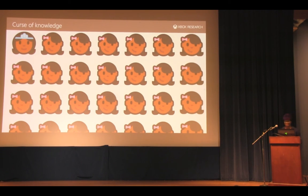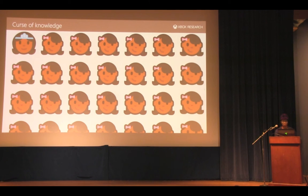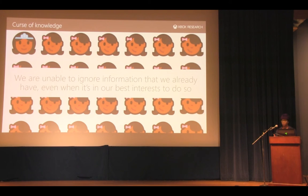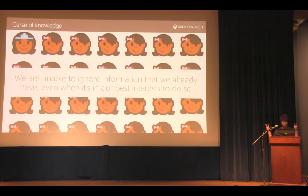In game development, the false consensus bias can make us think that other people play and enjoy games exactly the same ways that we do. The truth is that game developers are not just like everyone else — months or years of working on a game means developers are already coming from a very different perspective than most players. And even if they realize that, the curse of knowledge bias gets in the way, making it impossible to break outside of that perspective. Being an expert makes it really difficult to place yourself in the mindset of someone who doesn't have the private additional knowledge you already have. The false consensus and curse of knowledge biases combine to lead developers to form misconceptions about real players and exclude those who don't match those misconceptions.